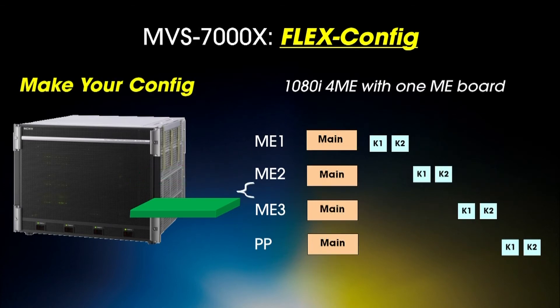This configuration allows me to use only a single board to get four MEs out of the switcher. Notice this board is now chopped up into four pieces, and each ME has two keyers in this mode. Note that Multiprogram 2 is not available in this mode.